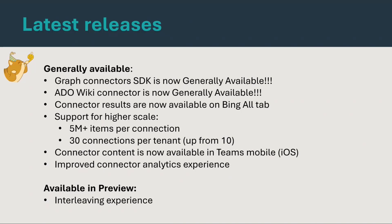Connector results are now available on the Bing All tab. Earlier, connector results were only available in your search or in the custom verticals you create for each data source. Now these connector results are also available in the All tab, in addition to the Work tab. We have also increased the per-connection item limit to more than five million items per connection. The number of connections you can create at a tenant level has gone up from 10 to 30. If you have high-scale requirements, please reach out and we can figure out how to support you.